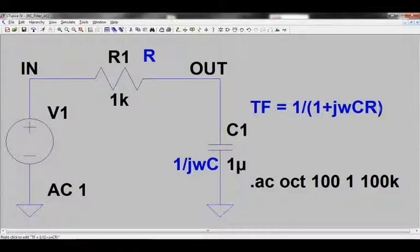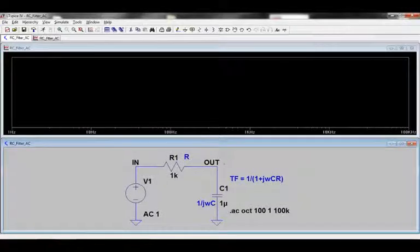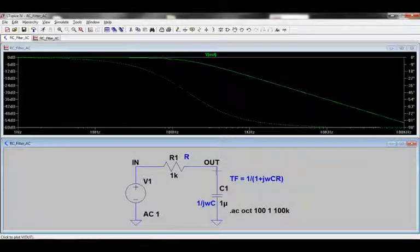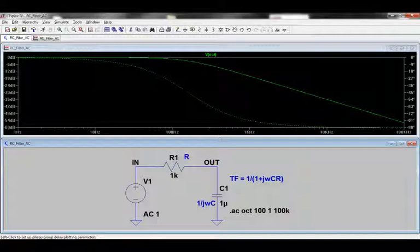By clicking on the running man symbol, the plot window appears, and we can probe the output voltage. Here we can see the output voltage, how it varies with frequency, with the left-hand axis as dBs and the frequency plotted on the x-axis. This is otherwise known as the Bode plot.